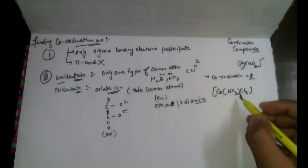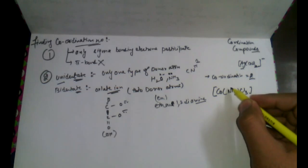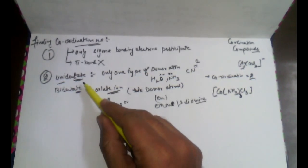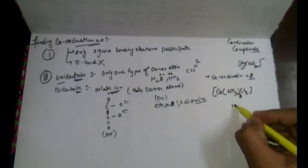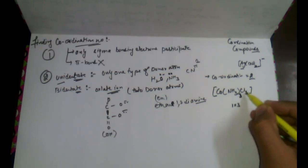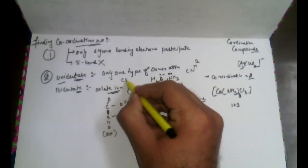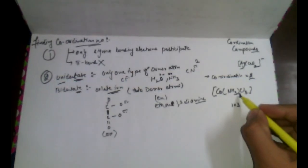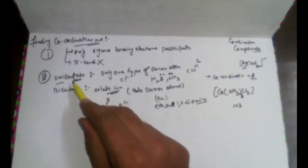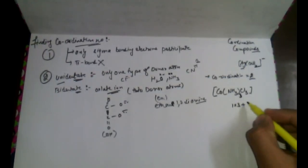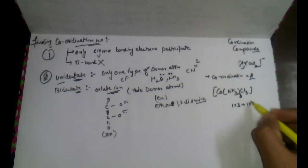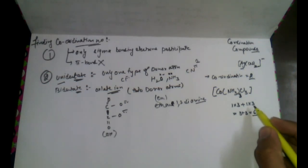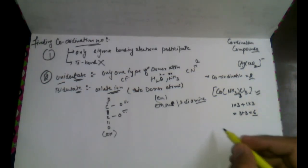Chlorine already has two electrons so it is a part of unidentate. Uni means 1, so 1 × 3 = 3 for one set of chlorine ligands, plus 1 × 3 = 3 for another set. Chlorine is a part of unidentate, so 3 + 3 = 6. We can say the coordination number of this compound is 6.